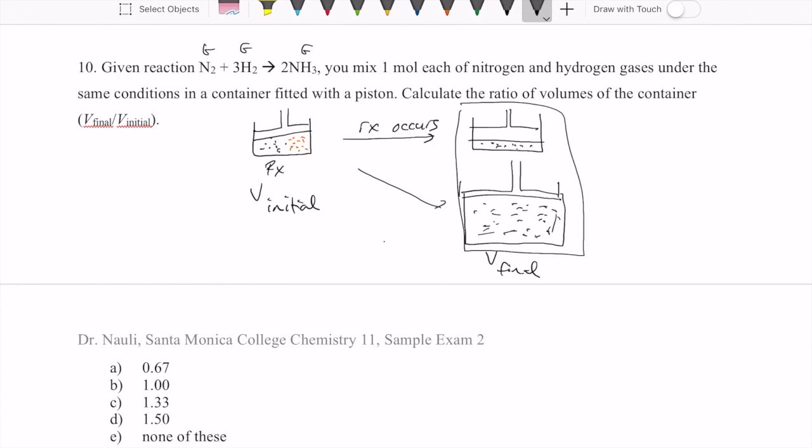Because we're dealing with all gases, what we have to think about is what gases might be there at the beginning and what gases are there at the end. So initially we have N2 and H2. So we have to figure out the volume of the N2 and the volume of the H2 in the initial condition.